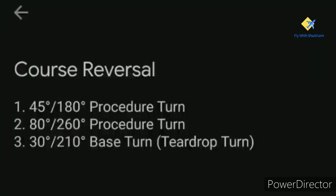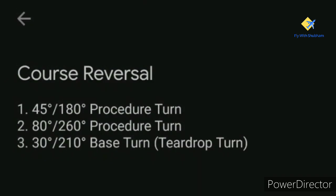There are three different procedures we can follow to perform a course reversal. The first is the 45-180 procedure turn, the second is the 80-260 procedure turn, and the third is the 30-210 base turn, also known as the teardrop turn. In this video we will only talk about the 45-180 procedure turn, which is the most common procedure turn used in aviation.